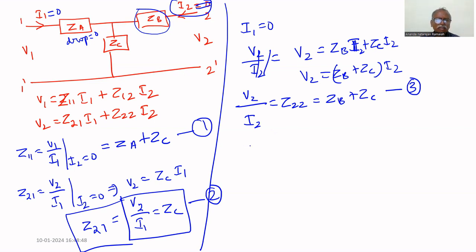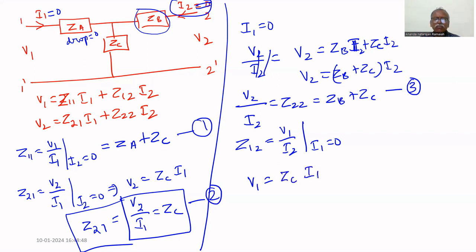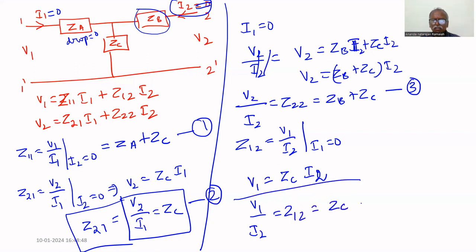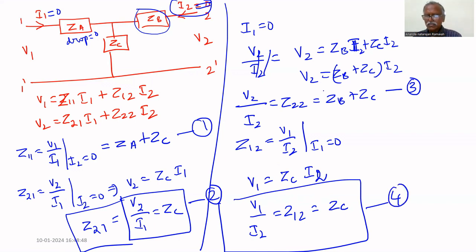Now find z12 = v1/i2 provided i1 = 0. With i1 = 0, v1 = z_c·i2. Therefore v1/i2 = z12 = z_c. We have now found all four Z parameters.